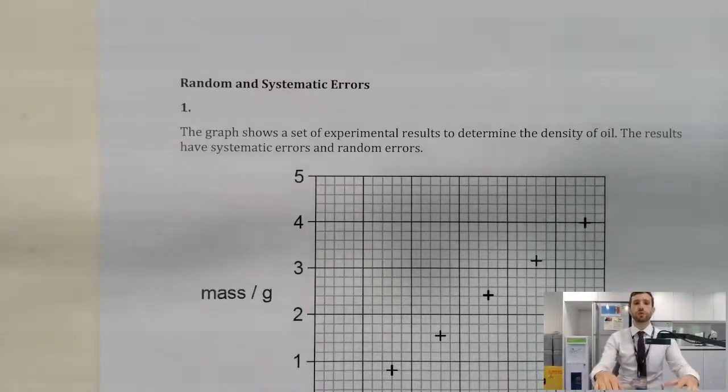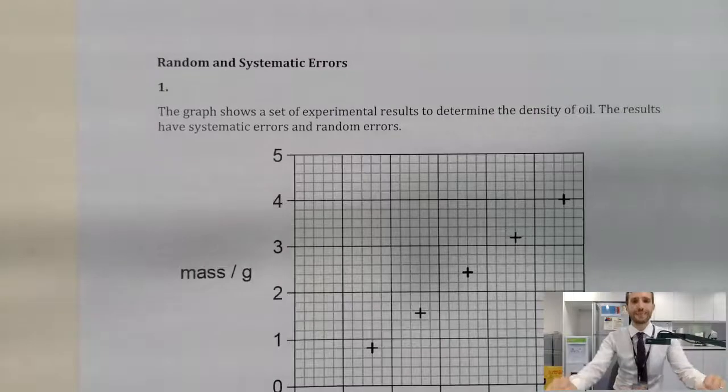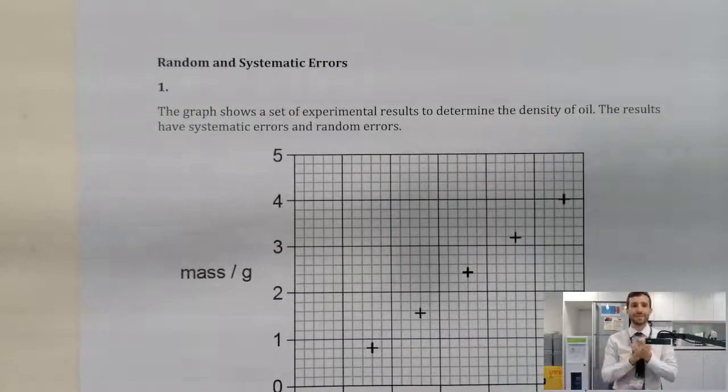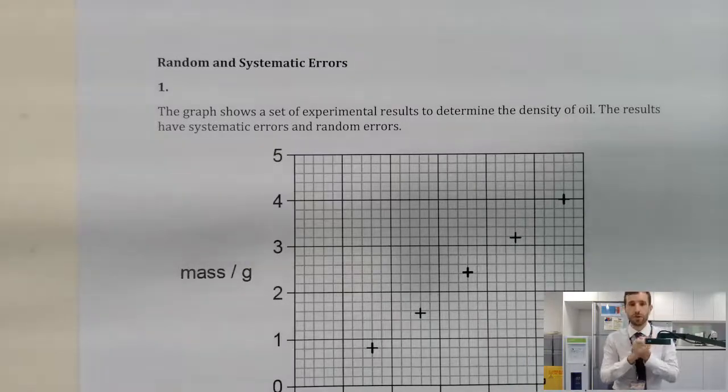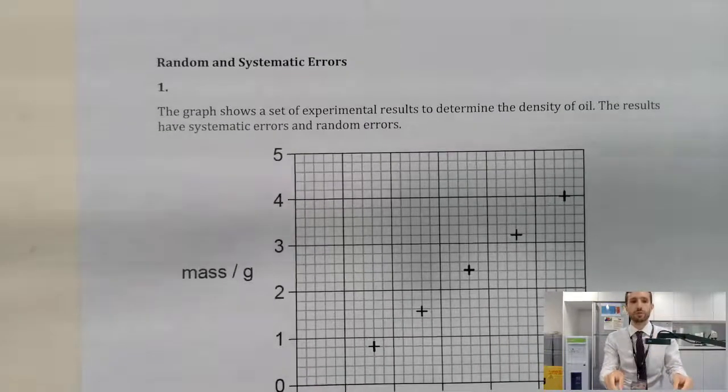Hi there folks, Mr Wilshaw here. We're going to talk through 10 multiple choice questions at IB level on random and systematic errors. Hopefully 10 questions, 10 minutes, we should be able to do it.